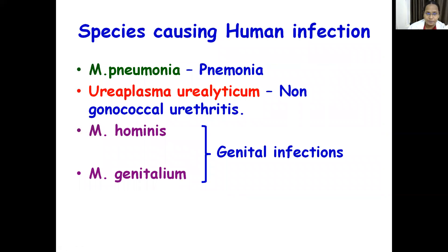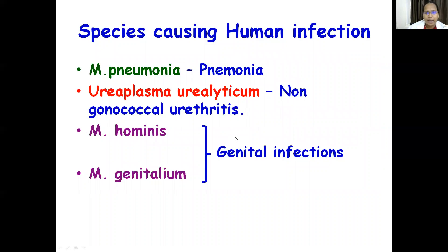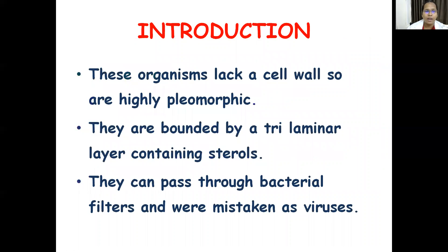The species causing human infections are: Mycoplasma pneumoniae — causes pneumonia; Ureaplasma urealyticum — causes non-gonococcal urethritis (also called non-specific urethritis); Mycoplasma hominis and Mycoplasma genitalium — cause genital tract infections. When Mycoplasma comes as a short-notes question, these points are essential: they are the smallest free-living microorganisms growing in cell-free media, and the common infections are pneumonia (M. pneumoniae), non-specific urethritis (U. urealyticum), and genital infections (M. hominis and M. genitalium).